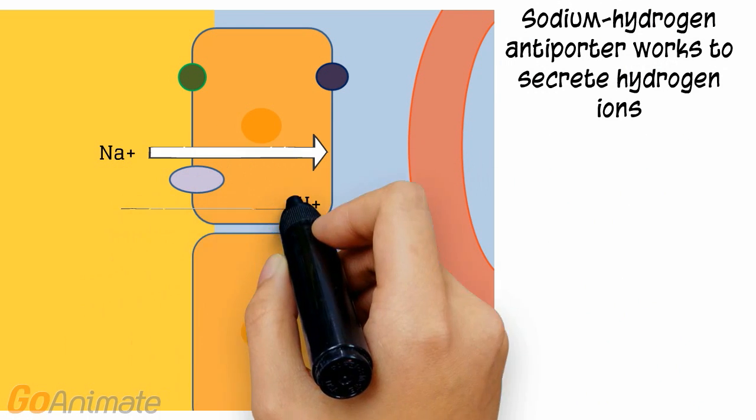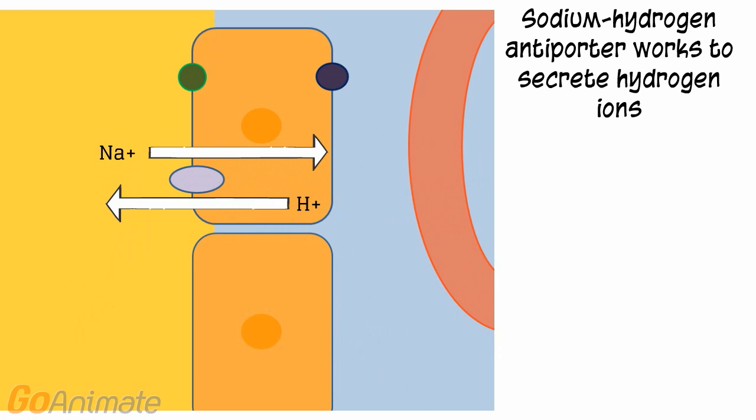Hydrogen ions from the blood are secreted by the sodium-hydrogen antiporter, which moves sodium in one direction while moving hydrogen ions in the other. The secretion of hydrogen ions works to balance blood pH.